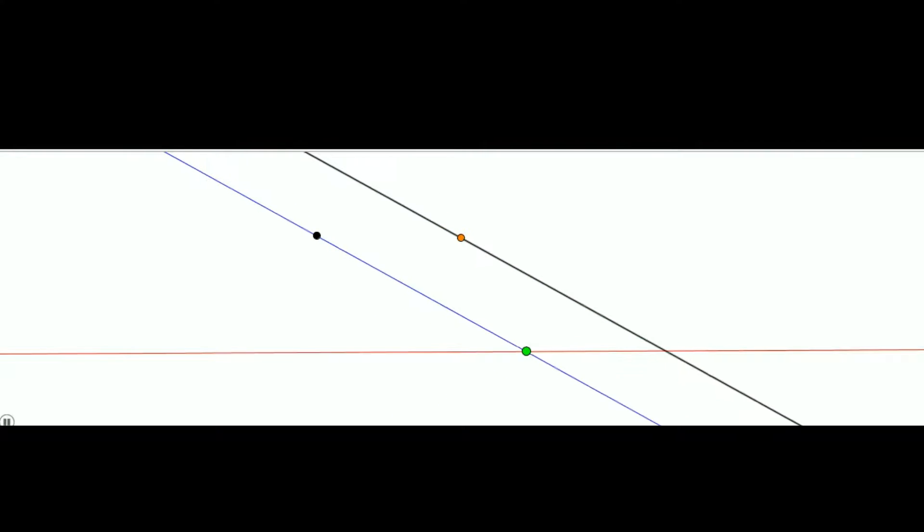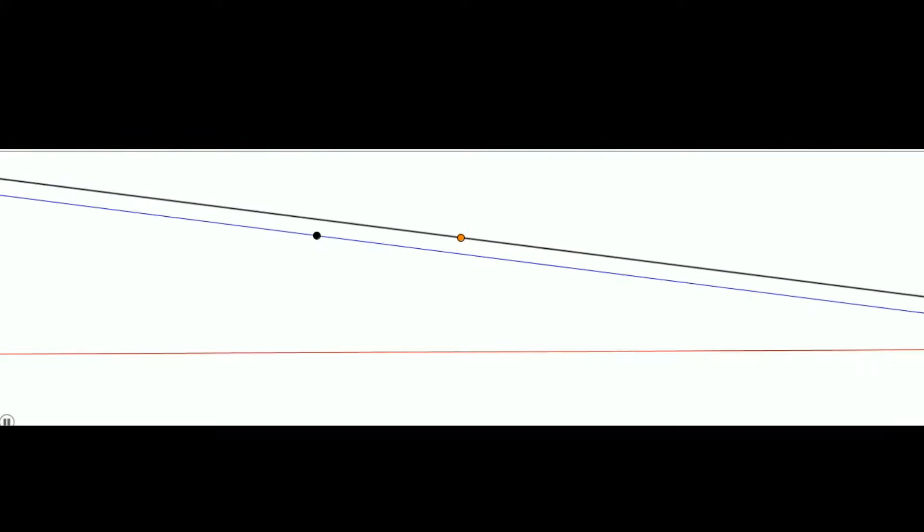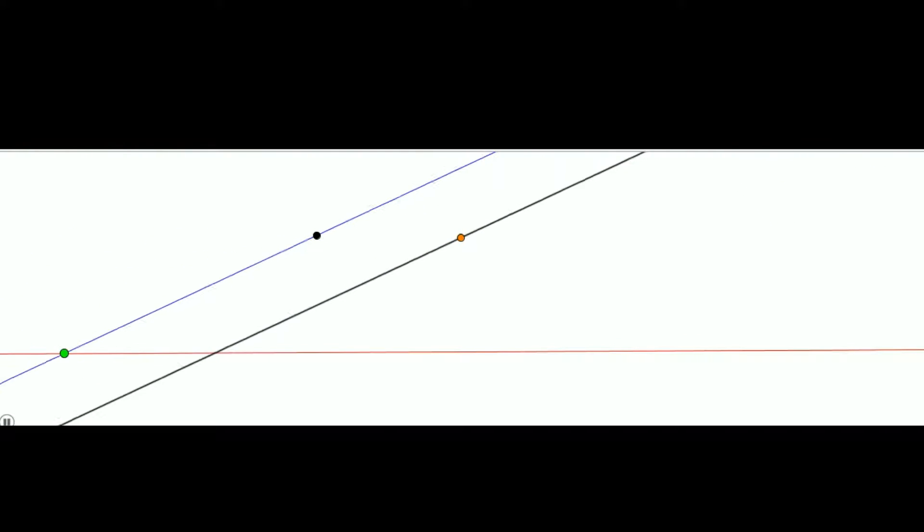The thing is, though, as these lines rotate, they're going to meet at different points at infinity. And so, we can then try to get to the answer of what the set of all points at infinity on a plane look like.